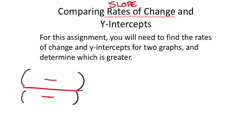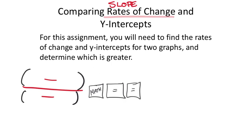If you put it in the calculator like this, it's just going to give you a decimal. Once you get the decimal, you'll see the button that says math right underneath the alpha button. Push enter, enter, and the calculator will change whatever decimal you have into a fraction.